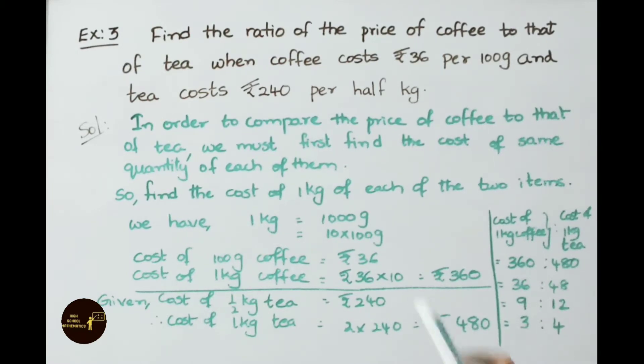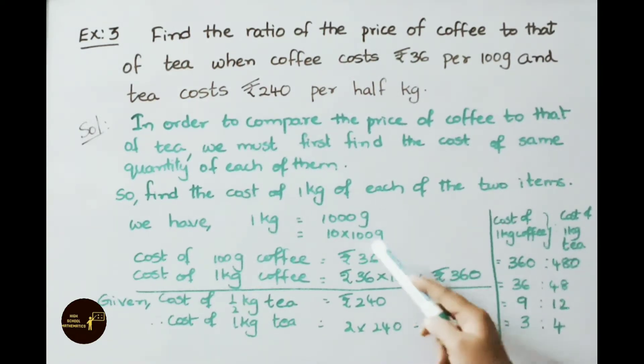We have 1 kg means 1000 grams that can be written as 10 into 100 grams. They have given cost of 100 grams of coffee as 36 rupees. Now let us find for 1 kg quantity. Cost of 1 kg coffee is 100 grams 10 times means 1 kg. So 36 into 10 that equals to 360 rupees.